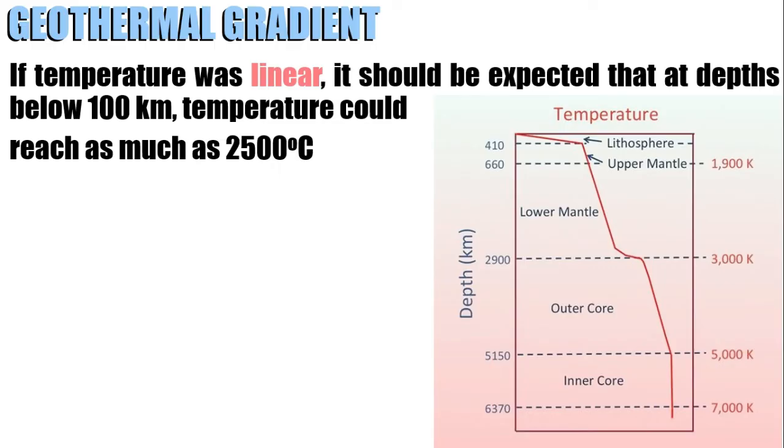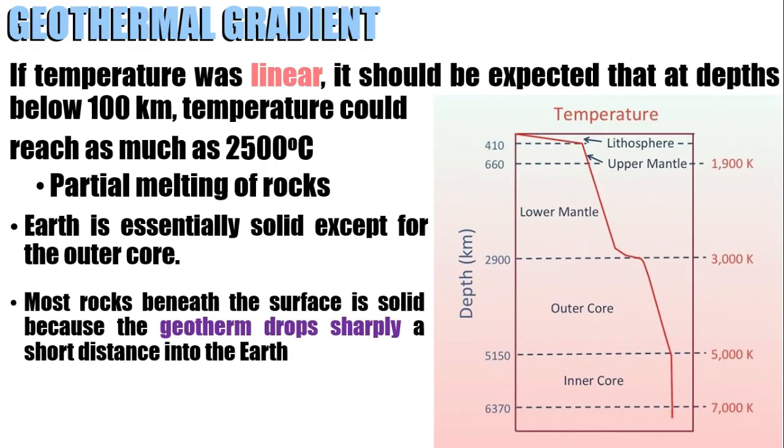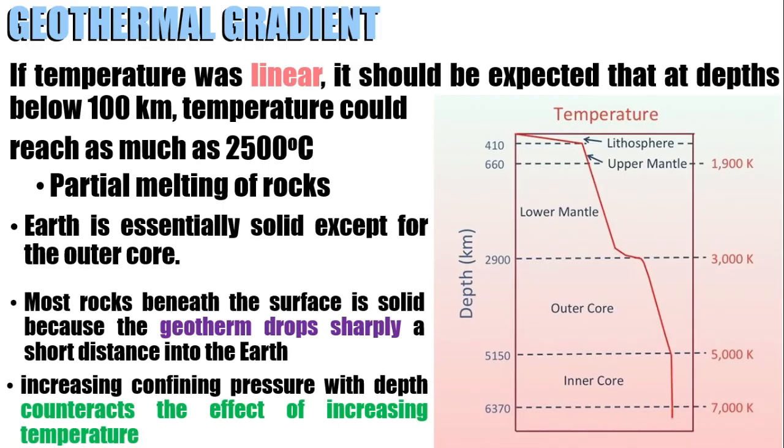We know that earth is essentially solid except for the outer core. Most rocks beneath the surface are solid because the geotherm drops sharply a short distance into the earth, and increasing confining pressure with depth counteracts the effects of increasing temperature.